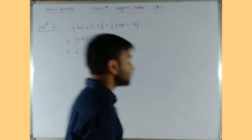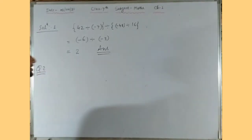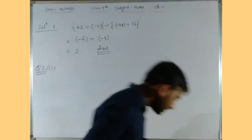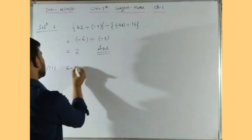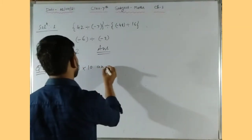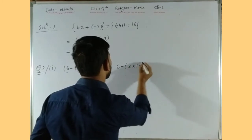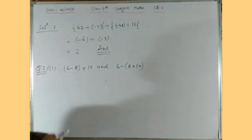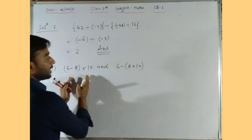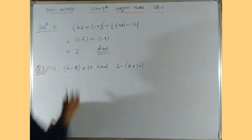Question number 2: state which is greater. The first part: we have 6 minus 8 times 10, and 6 minus 8 in bracket, multiplied by 10. We need to find which is greater. To do that, we will first simplify both expressions.